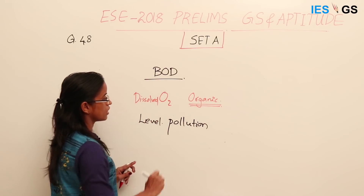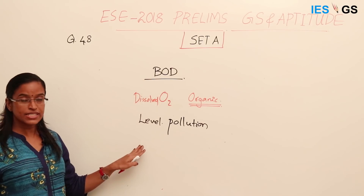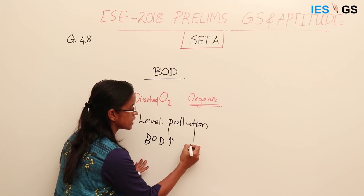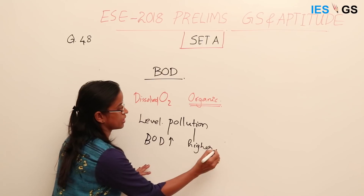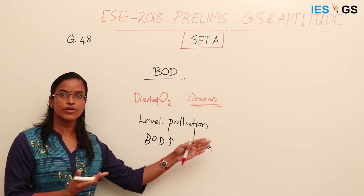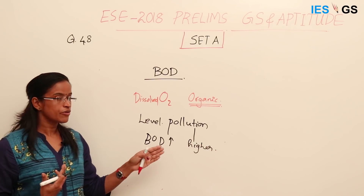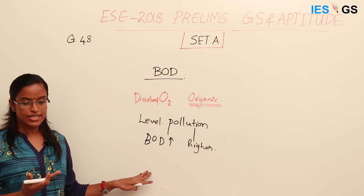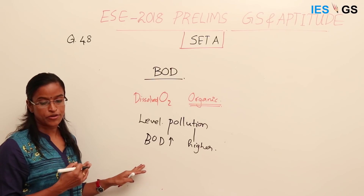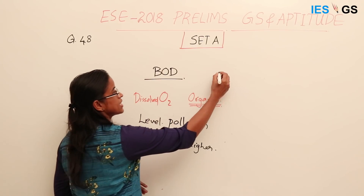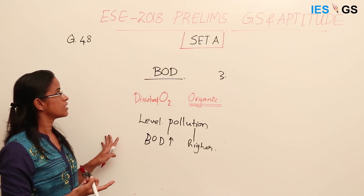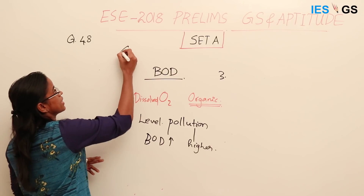When BOD is higher, it means pollution is also higher — more oxygen is required to digest the organic matter present in the water. Lesser BOD means less polluted water. So low microbial contamination and absence of microbial pollution cannot be the answers. The correct option is 3: it indicates a high level of microbial contamination in the water. The answer is option C, statement 3 only.